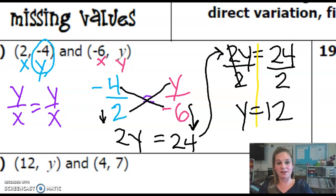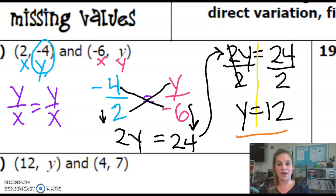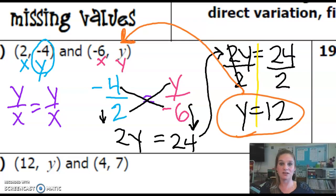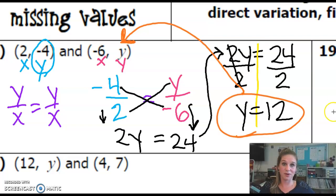So we could take that back and we could put that into that coordinate. If that's direct variation, then that coordinate would be negative 6 comma positive 12.